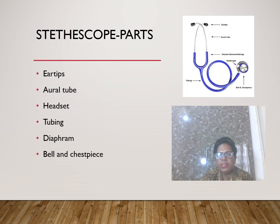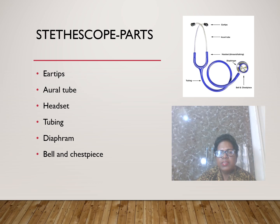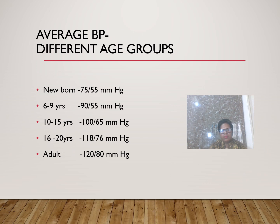Parts of a stethoscope: ear tips placed in the ears, oral tubing, headset, tubing, diaphragm (flat surface), and bell (chest piece). Average BP by age group: newborn 75/55 mmHg; 6–9 years 90/55 mmHg; 10–15 years 100/65 mmHg; 16–20 years 110/76 mmHg; adults 120/80 mmHg.